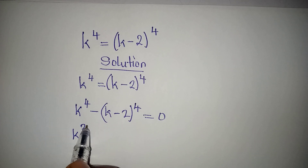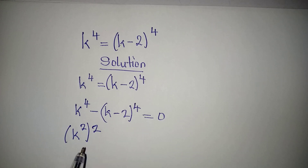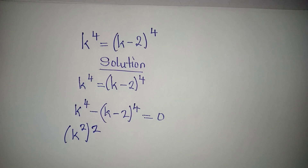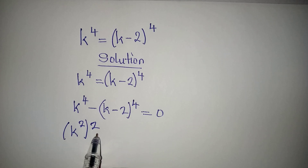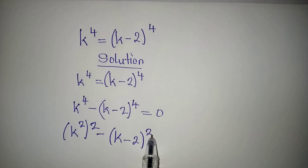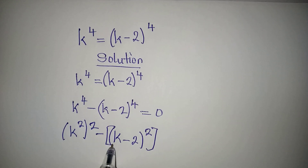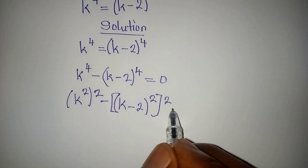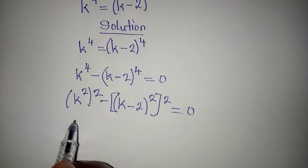Now we have k to the power of 2, squared, and I'm doing this because I want to take the difference of two squares. Then minus (k minus 2) squared, also squared — I'm breaking the 4 — so I write 2 on the outside, and this is equal to zero.